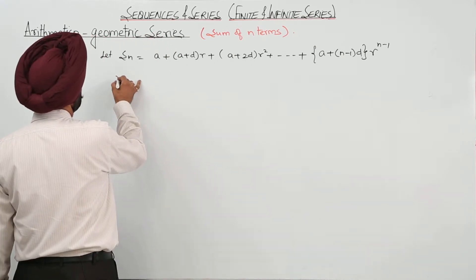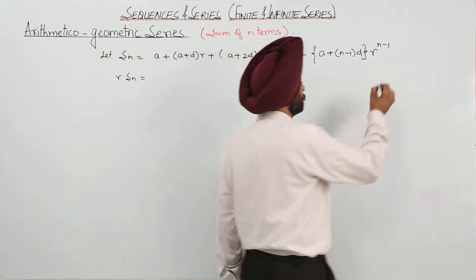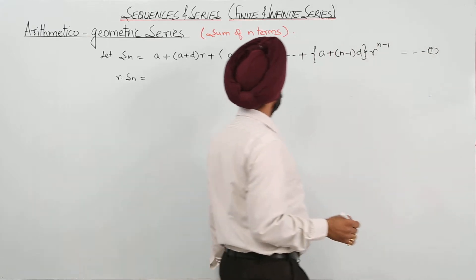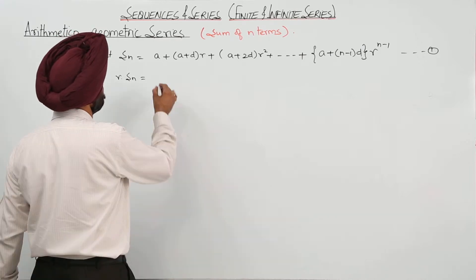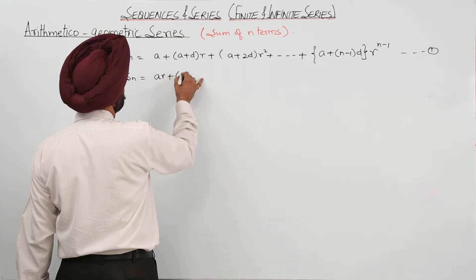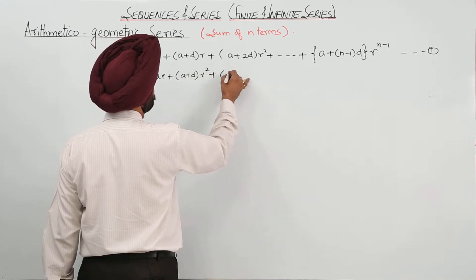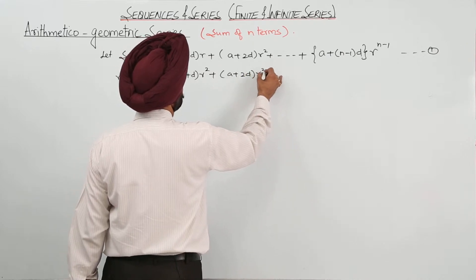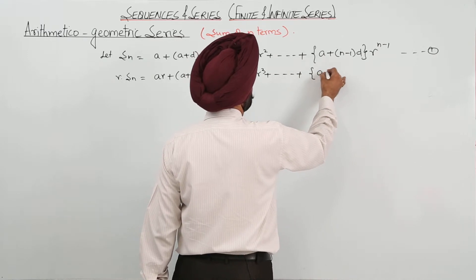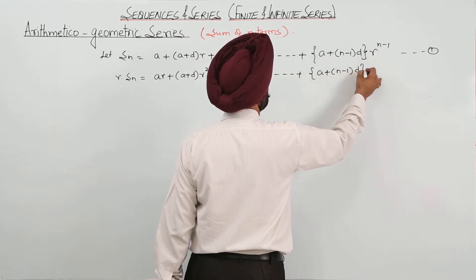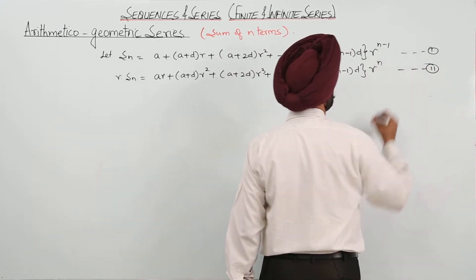Let this be equation 1. Now multiplying both sides of equation 1 by r: r times S_n equals ar plus (a plus d)r squared plus (a plus 2d)r cubed, continuing up to (a plus (n minus 1)d) r raised to power n. This is equation 2.